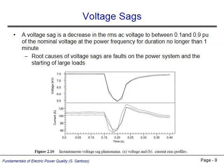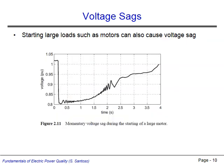Voltage sags occur when the RMS voltage magnitude falls to between 10% and 90% of the nominal value. Short circuit faults on the system are usually the cause of voltage sags, though they can also occur due to the inrush current associated with the starting of large loads, such as motors. The figure shows a voltage sag event, with all three phase voltages sagging to about 0.7 per unit. Here is another example of a voltage sag, this one caused by the starting of a large motor. The motor draws a large amount of inrush current as it starts, dropping the voltage upstream until the current diminishes and voltage returns to nominal levels.